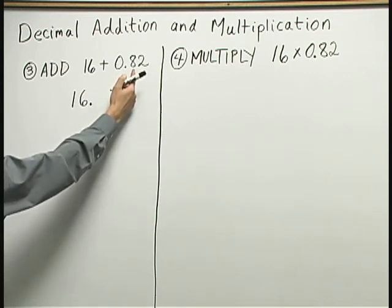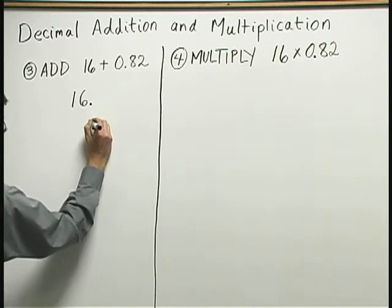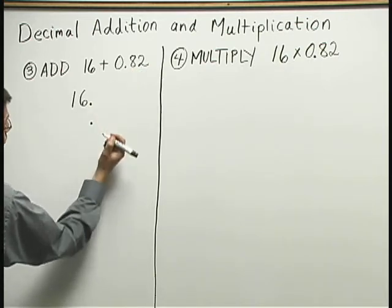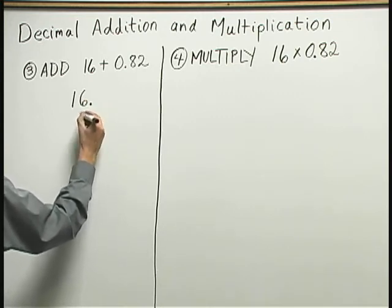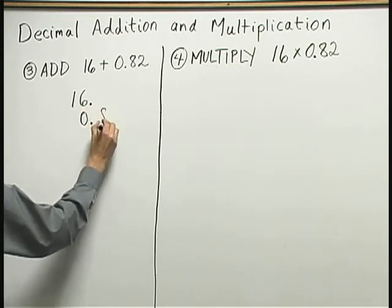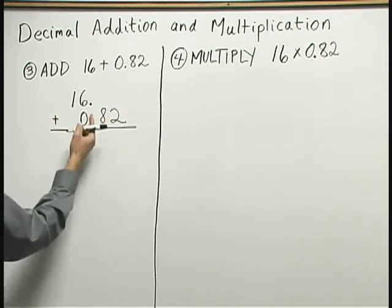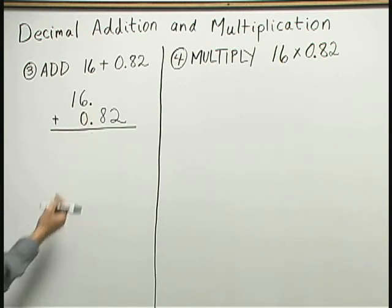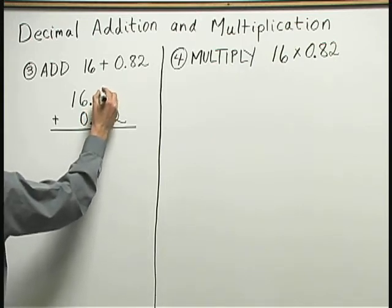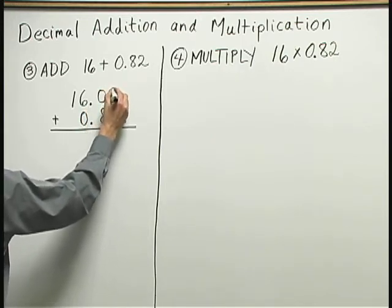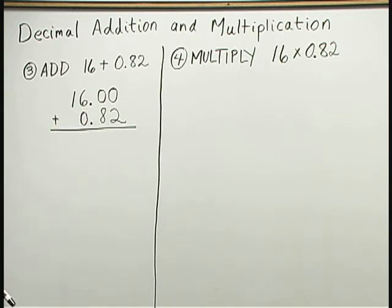Then, if I'm going to add 0.82, because I'm adding, I need to line up the decimal points. So, the 0 goes below the 6, and the 8, 2 sticks out to the right when I add. I have 16 point plus 0.82. Now, if you'd like, you could write two zeros to the right of the decimal point after the 16. 16.00 is equal to 16. And it does make things a little easier to line up here.